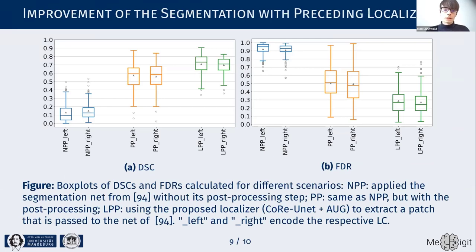We then investigated the impact of localization as a pre-processing step, and found that compared even to the segmentation network with post-processing, the combination of localization plus segmentation without any post-processing — shown in the green box plots — performed apparently better. This is mostly caused by a reduction of false positive regions, as also indicated by the false discovery rate on the right.